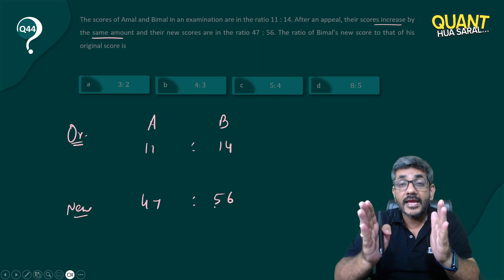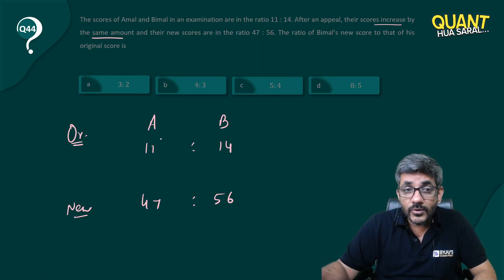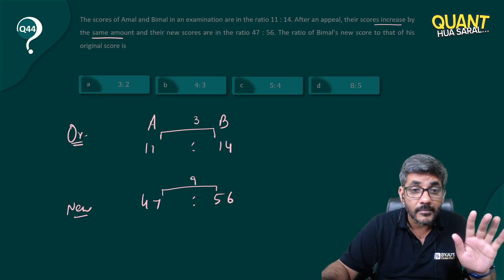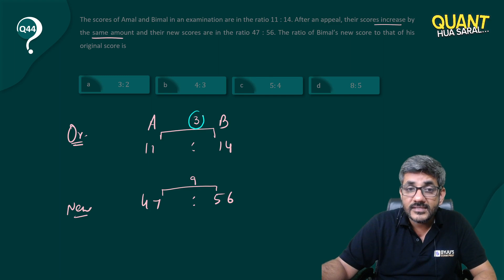So here the gap between them is three, but here the gap between them is nine. I want the same gap between them, so can I say I'll have to make this three as nine? So let's multiply it by three. So it will become 33, it will become 42.